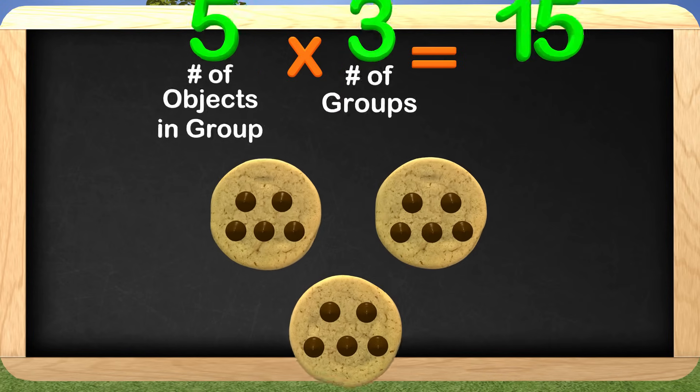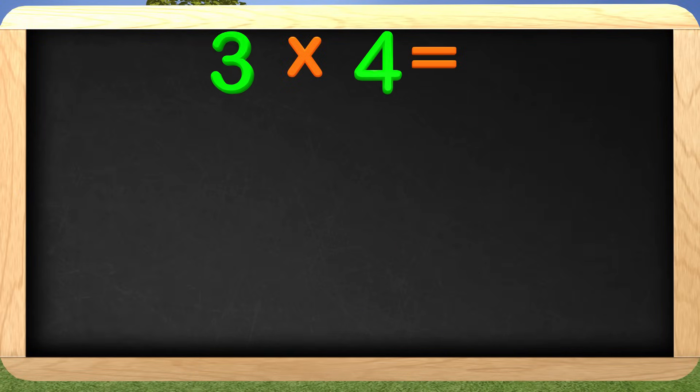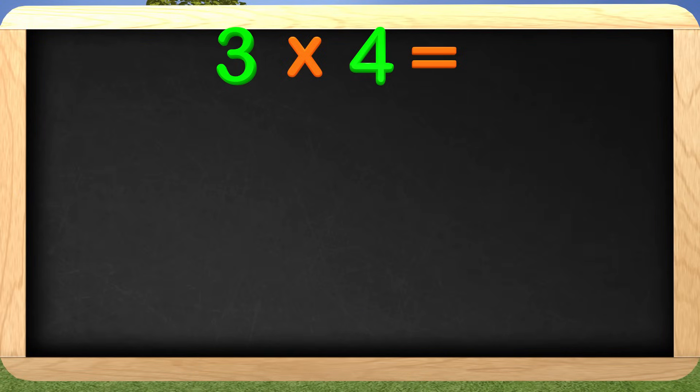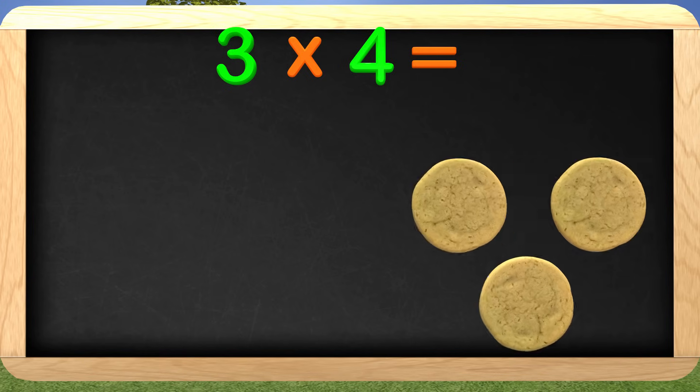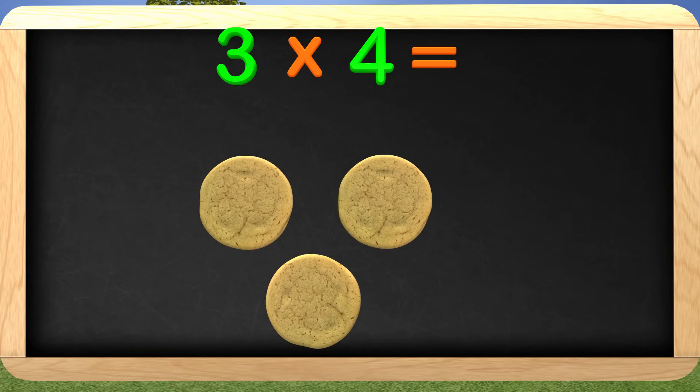Let's try a new problem. Here is 3 multiplied by 4. We are going to use a picture again to understand this problem. Here are 3 cookies, which shows us the number of groups. Can you tell me how many chocolate chips I should put on each cookie? We need 4 chocolate chips on each cookie to show the number of objects in each group. Can you count the chocolate chips and tell me what 3 times 4 is? You can use skip counting or count by 1's.